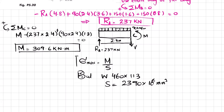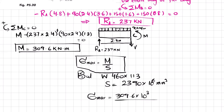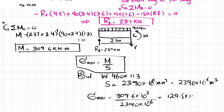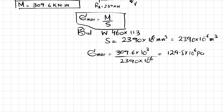Substituting into the formula: σ_max = 309.6 × 10³ N·m divided by 2390 × 10⁻⁶ m³. This gives σ_max = 129.5 × 10⁶ Pa, or σ_max = 129.5 MPa.